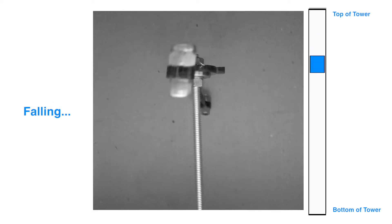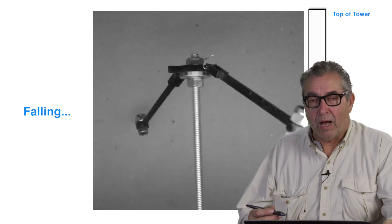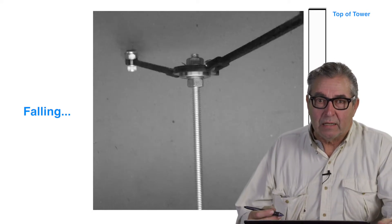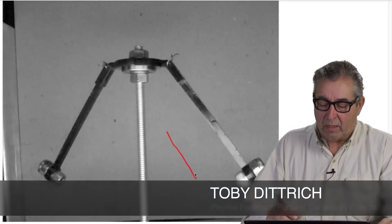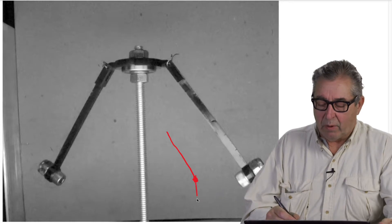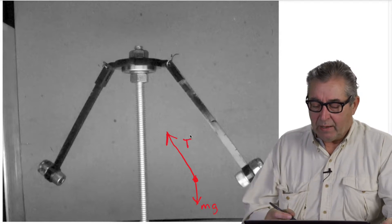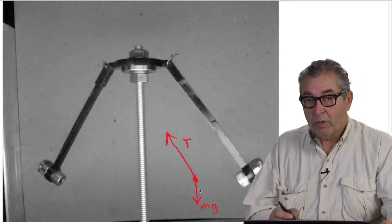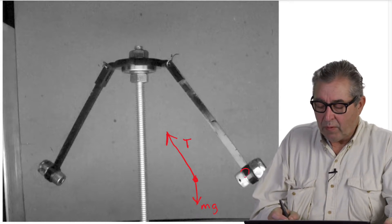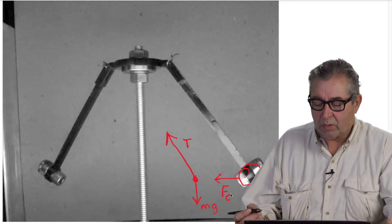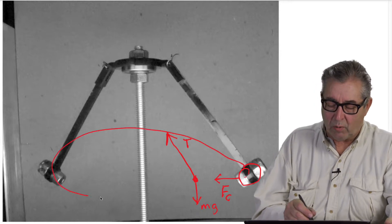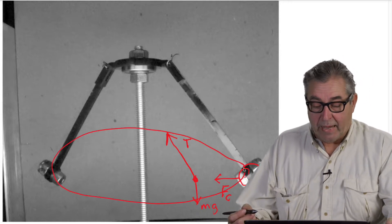The surprising results of the conical pendulum in the drop tower under zero-G conditions is very interesting to explain. Normally, when you have a pendulum swinging around and around — a conical pendulum — you have weight pulling downward and tension pulling upward, and those two forces produce a resultant force inward on the bob, which we call the centripetal or centri-seeking force, creating a circular motion around and around the axle.